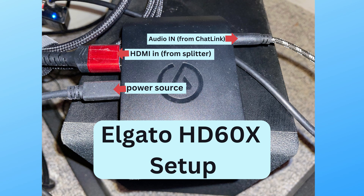Here's what the Elgato HD60X looks like. You can see the audio in port on the back where the Chat Link connects. On the front there's the power source and the HDMI in coming from the splitter. So the HDMI carries only video, and the Chat Link Pro — also made by Elgato — handles the audio in separately. The only way to get your party chat captured is through that audio in port. The power source cable also doubles as the USB feed going to the computer.